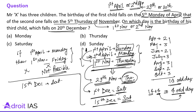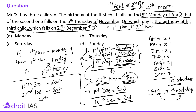The question asks on which day is the birthday of his third child, which falls on 20th December. If 15th December is Saturday, then 22nd December will also be Saturday (after 7 days). So 2 days before that, 20th December will be Thursday. This is a very good calendar question, and for solving this type of question in examinations, we should be very comfortable with the topic. Hope you enjoyed this solution.